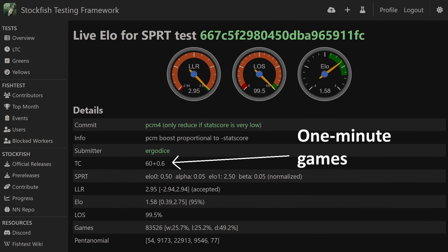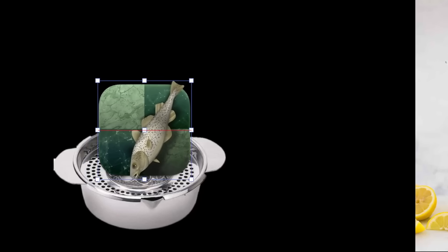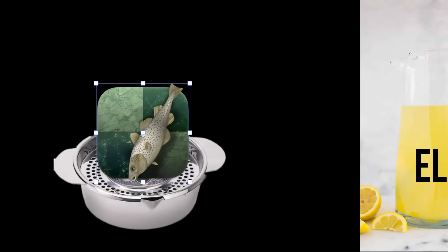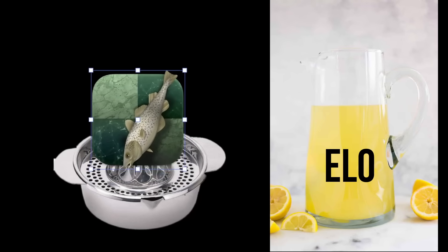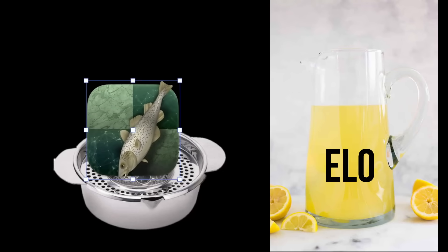Changing the size of the reduction based on information about the position has been one of the best ways we've come up with to squeeze ELO, which is our measure of performance, out of the engine, and it's how I got this newest pair of improvements.